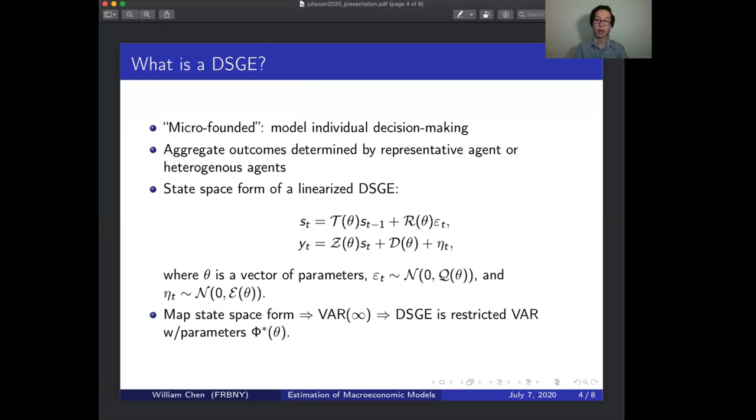To obtain aggregate outcomes, either you aggregate all of these agents into a single representative agent so that the economy behaves as if there was just one agent, or you have heterogeneous agents so that you need to aggregate outcomes across these different groups.